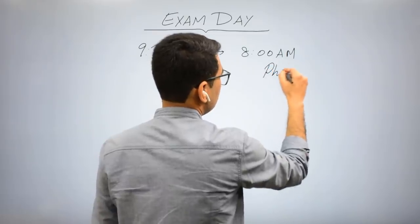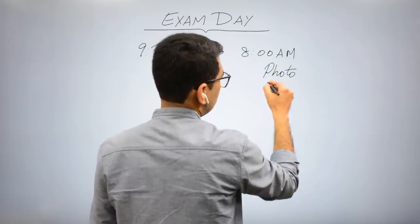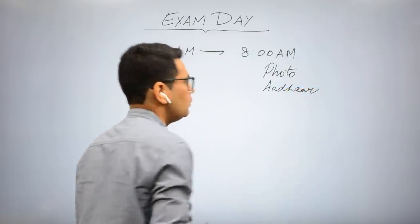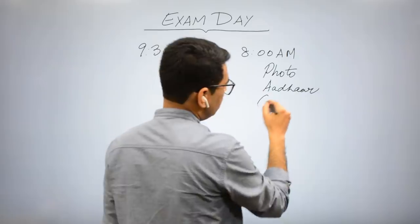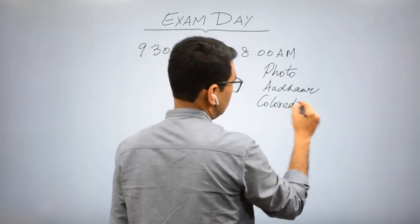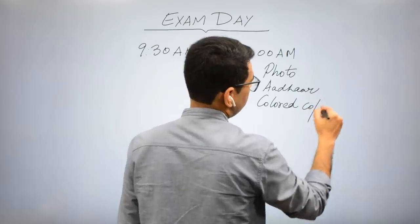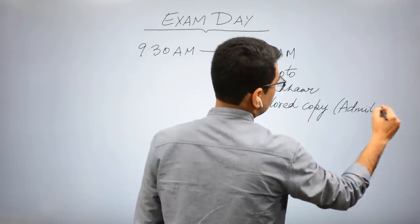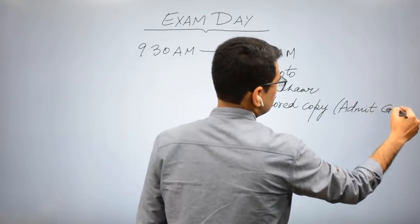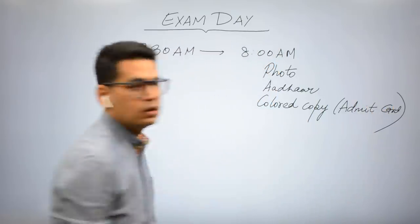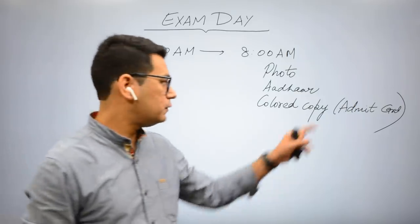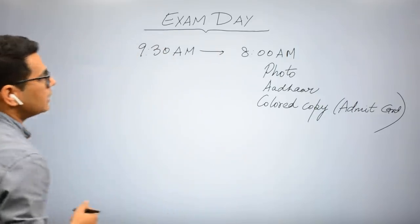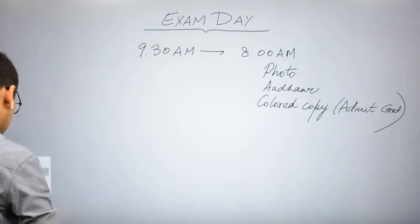What you should carry along with regard to the examination thing: admit card, photo, and address proof. These are the two mandatory things that you guys have to take, plus a colored copy. A colored photo copy of admit card. Please go out and check the instructions, they say so. You have to take a colored photo of the admit card, that is what you have to take. This is something very common.